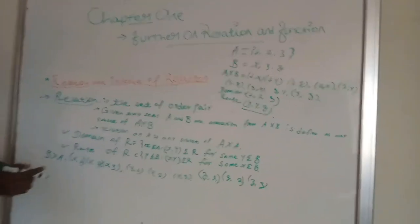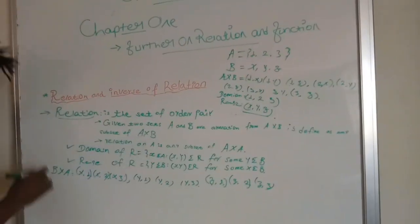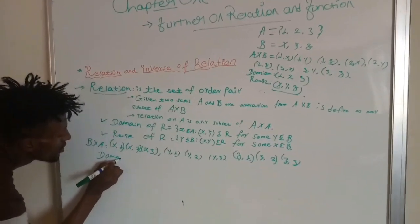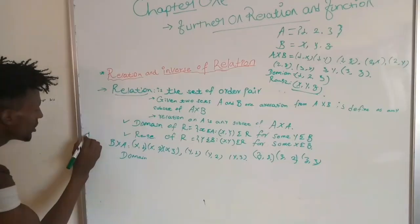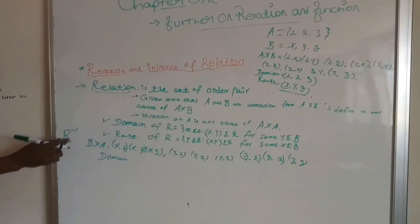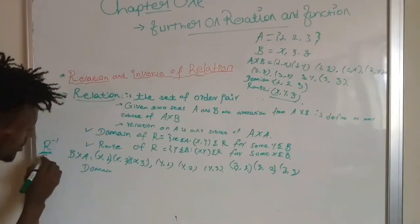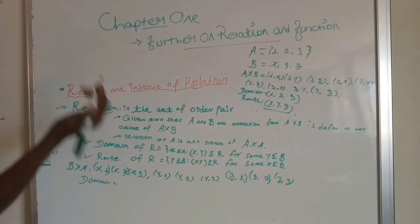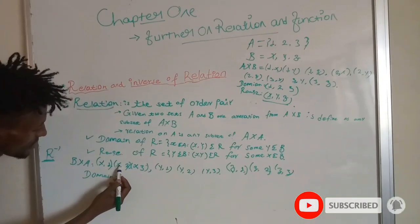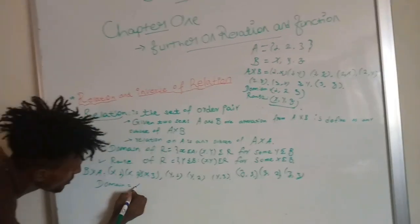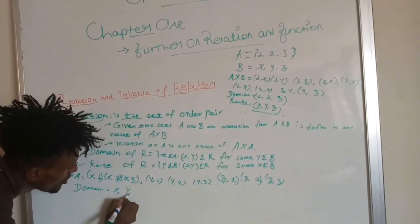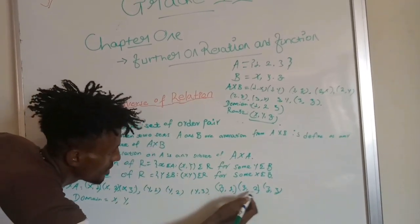Inverse of Relation — R inverse. The domain of R inverse: the first elements here are X, X, then Y, Y, Y, and then Z, Z, Z.